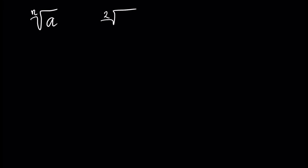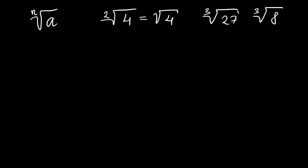Let's further talk about the root of a number. Let's say we have a root of a number a, and the root also has a power n. For example: square root of 4, third root of 8, fifth root of 32. How do we calculate all of these examples?